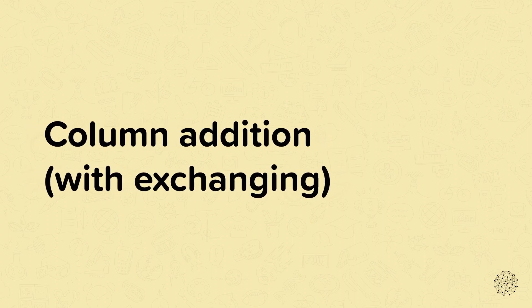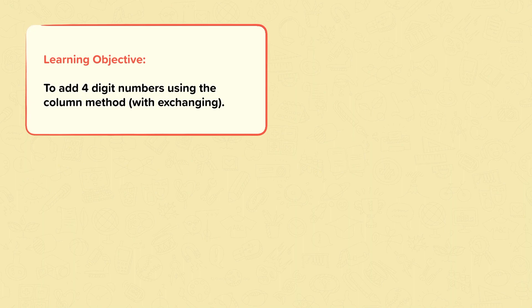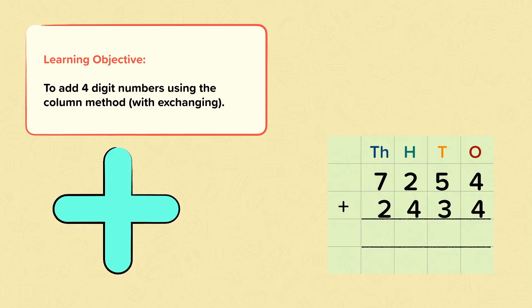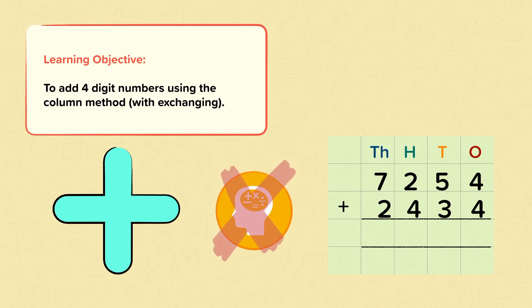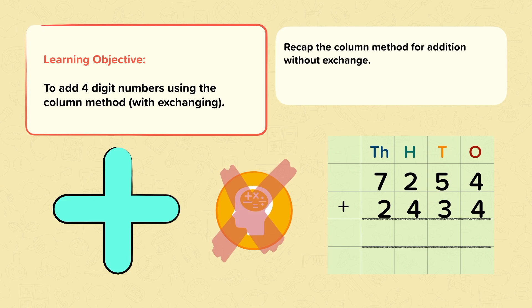Column Addition with Exchanging. In this nugget the learning objective is to add four digit numbers using the column method. Our calculations will involve exchanging. We use the column method when it's too tricky to do calculations in your head. We'll start by recapping the column method for addition without exchange and then we'll use the column method with exchange. So let's start by recapping.